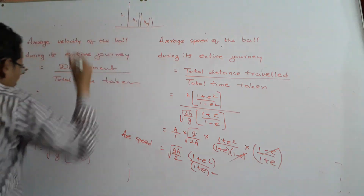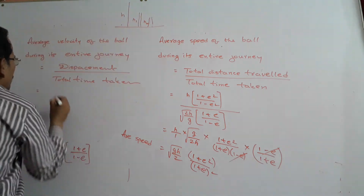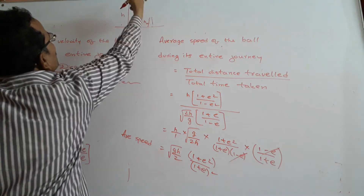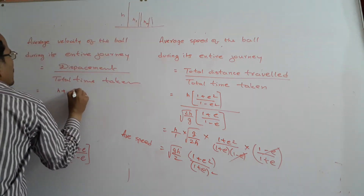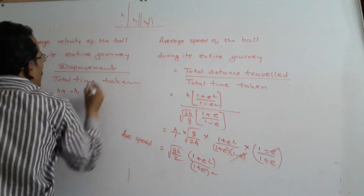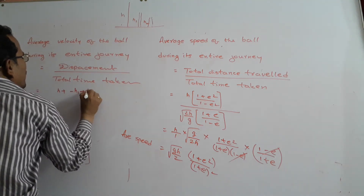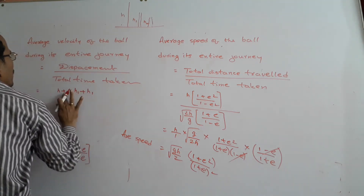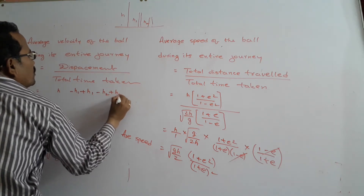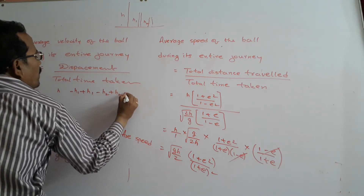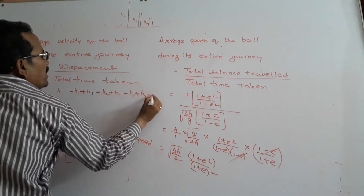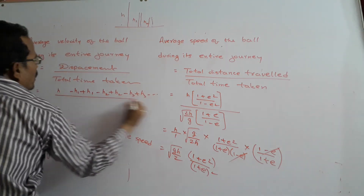Considering directions — taking downward as positive — the displacement terms are: H downward, minus H1 upward, minus H1 downward, plus H1 upward, minus H2 downward, plus H2 upward, and so on. All the intermediate terms cancel, leaving a net displacement of H.